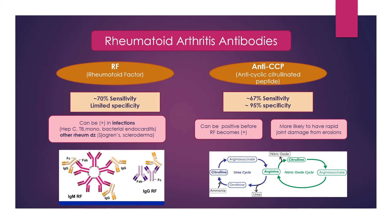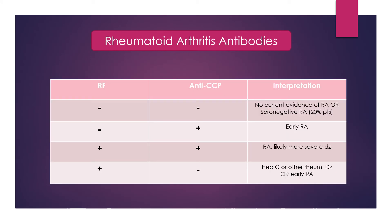To put these two in context, here's a chart between negative and positive combinations. If both of them are negative, oftentimes we think there's no current evidence of rheumatoid arthritis, but about 20% of patients with rheumatoid arthritis may actually have what we call seronegative RA because both antibodies are negative. They're diagnosed by clinical picture and imaging studies, usually by rheumatologists.